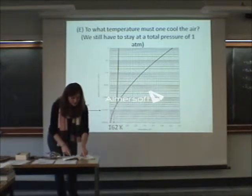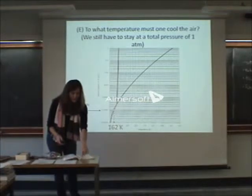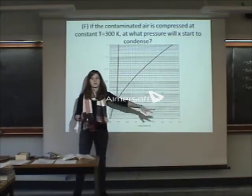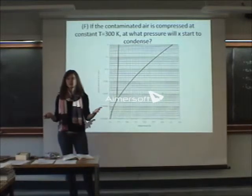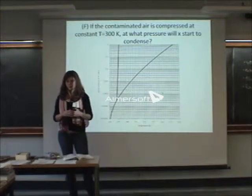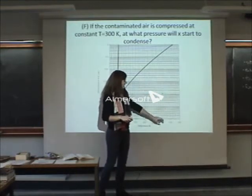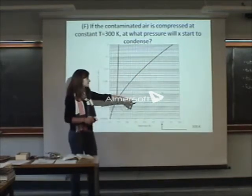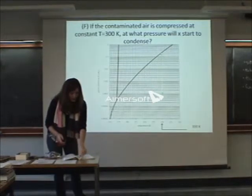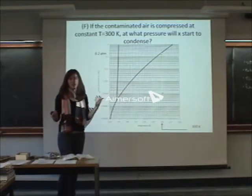That was E. So now we're doing F, which is if the air is compressed at a constant temperature, at what pressure will compound X start to condense? So we're back to our same old diagram, same point. Where should I go from here? Go vertically. Go vertically up. Why am I going vertically up? Because you're at constant temperature. So I'm at constant temperature, which means that I can just go straight vertical up. So as we go up, because we're at constant temperature, until we meet the line. So we're at 300 Kelvin. We're going to go straight up until we meet the line. And that's our new point. And so at what pressure will X start to condense? We know the partial pressure, which is 0.2 atm. But how do we find the total pressure?